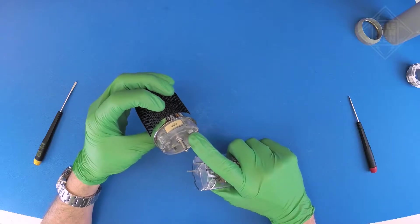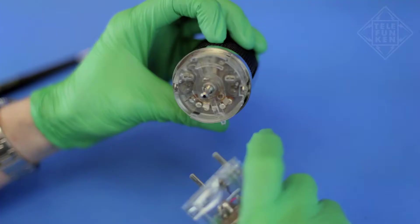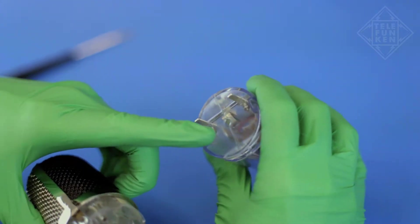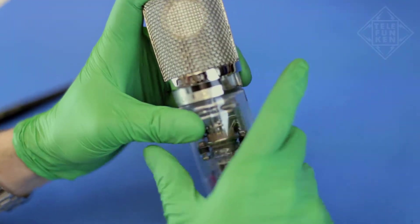Locate the two female spring contacts in the head assembly and the two corresponding male blade contacts on the top of the amplifier. Line up the contacts and gently attach the head. Be very careful not to bend the spring contacts.